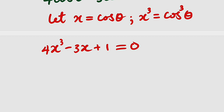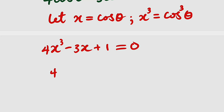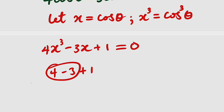We can carry out a rational root test. Testing x equals 1: 4 times 1 cubed minus 3 times 1 plus 1 gives 4 minus 3 plus 1, which equals 2, not 0. So x equals 1 is not a root.